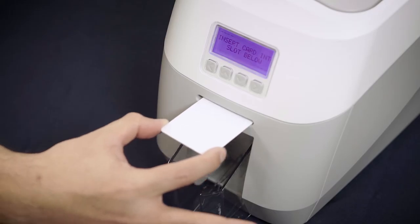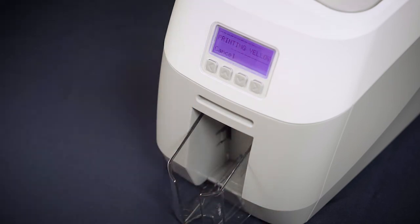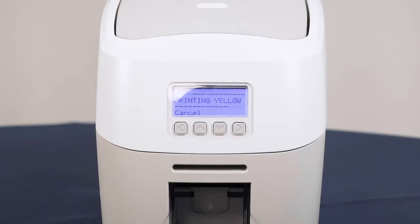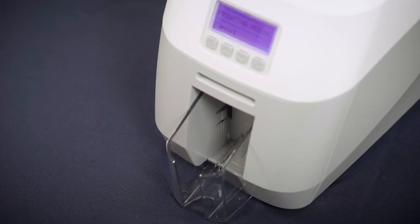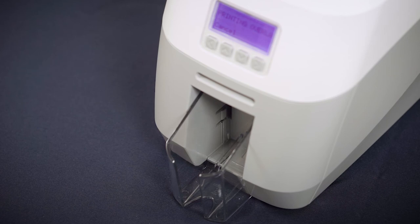When instructed, insert a single card into the slot at the front of the printer under the display. Your MagiCard 600 will now print the test card design. The display will tell you which colour is printing in turn. Once complete, your card will be automatically ejected into the hopper.